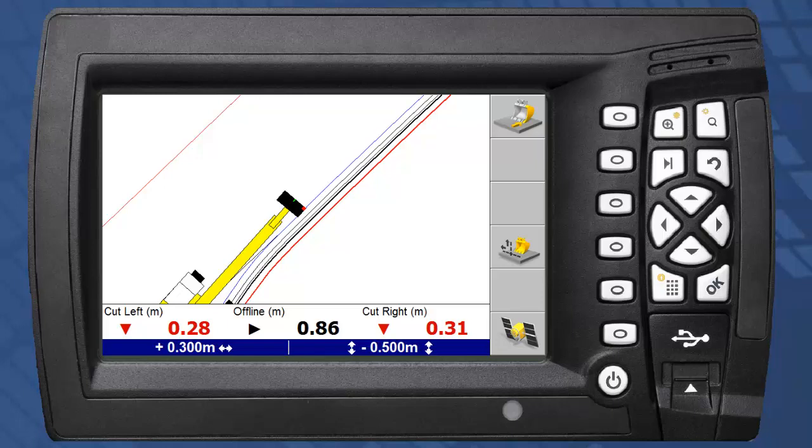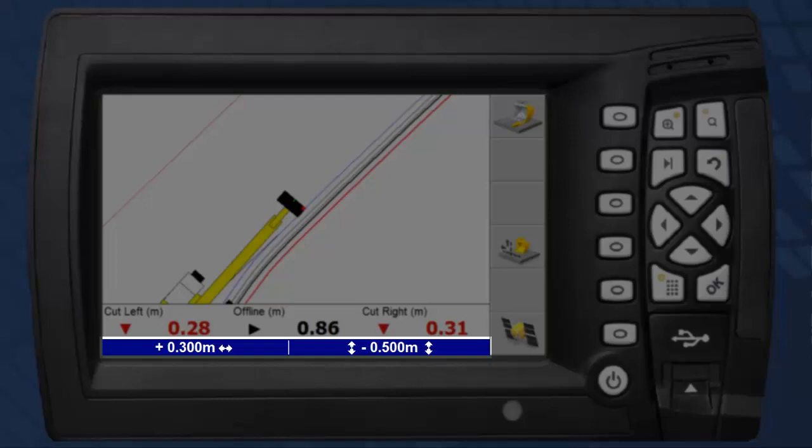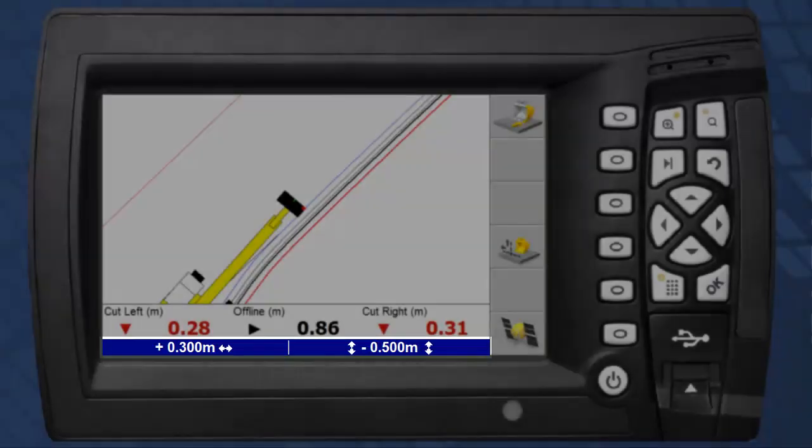Back on the plan view, we can see the original line, now bold, and the offset line in red. On the offset bar, we can see that we now have both a 0.5 metre vertical offset and a 0.3 metre horizontal offset.